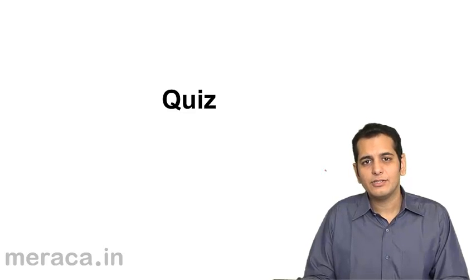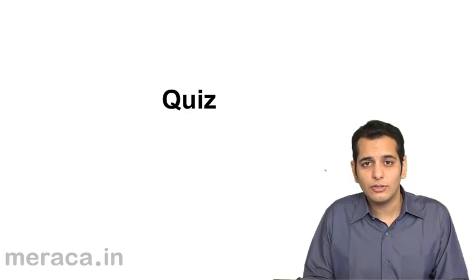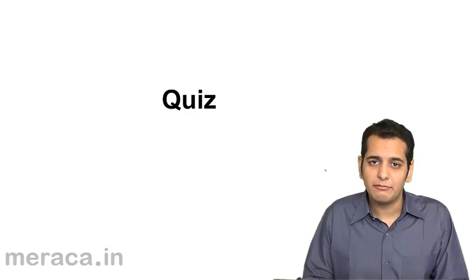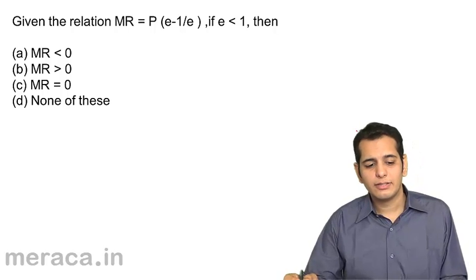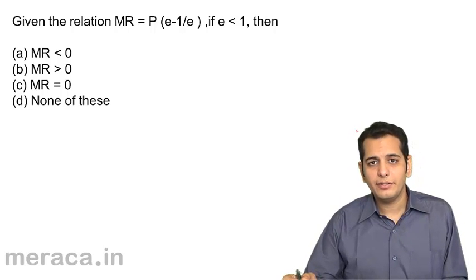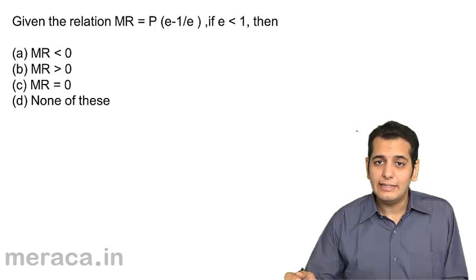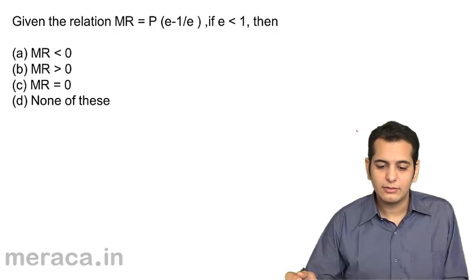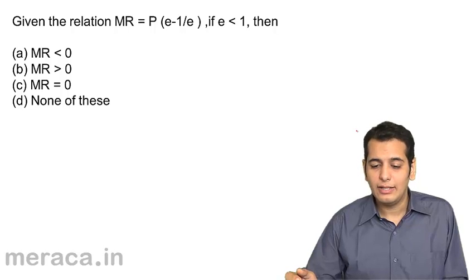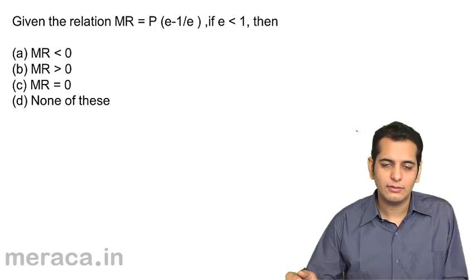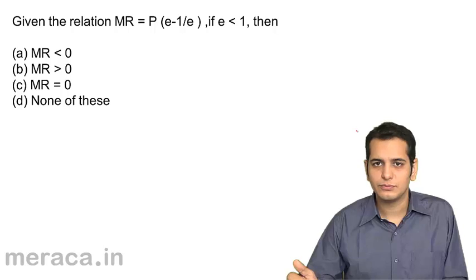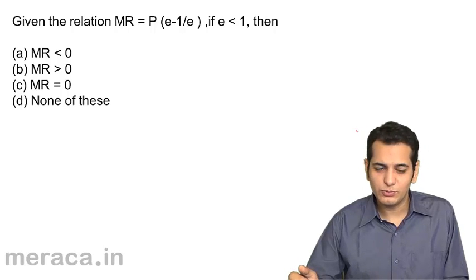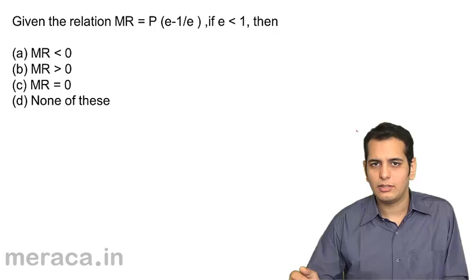Now, in this segment, let us take a short quiz on the concepts that we have learned until now. First, given the relation MR equals P into E minus 1 by E, and if E is less than 1, then: A, MR will be less than 0; B, MR will be greater than 0; C, MR will be equal to 0; D, none of these.